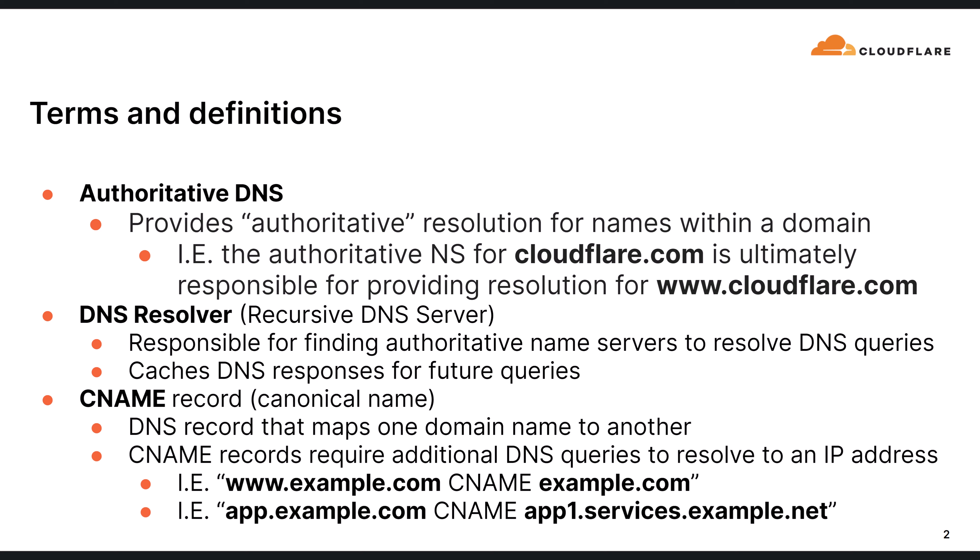Lastly, CNAME records, short for canonical name, is a type of DNS record that maps one domain name to another — the canonical name. CNAME responses require additional queries to resolve to an IP address, which is typically handled by the DNS resolver. You can see examples of CNAME records here, where www.example.com might point to example.com. CNAME record domain names and mappings don't need to exist in the same domain or even the same TLD. In the last example, you can see a CNAME record that maps a domain name in example.com to a domain name in example.net.